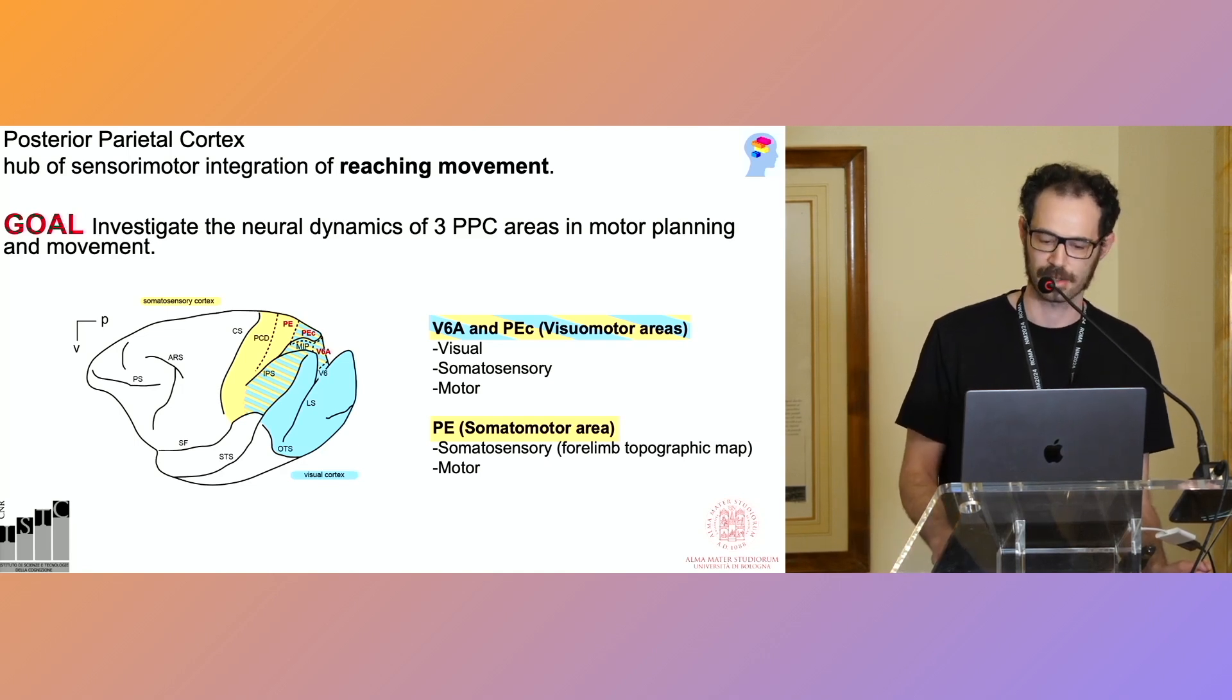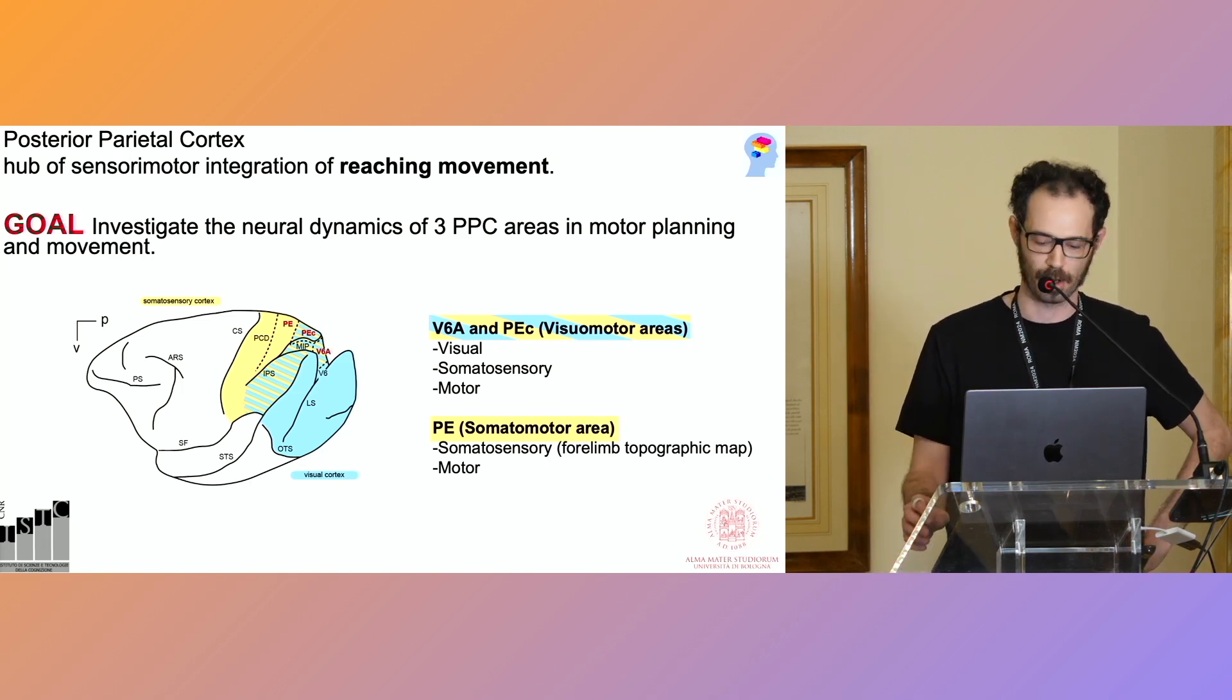Instead, PE is a somatomotor area. It contains motor neurons but the majority of its population is related to somatosensory information. And unlike V6A and PC, PE is organized in a topographic map of the upper arms.